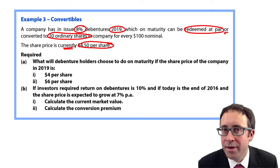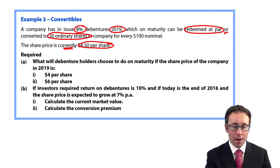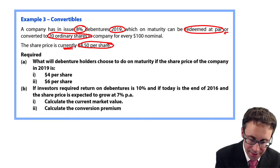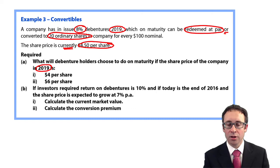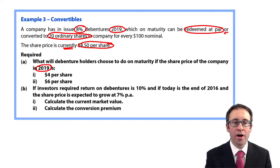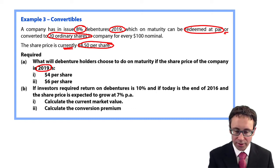Part A says, what will the debenture holders choose to do on maturity if the share price of the company in 2019, so in the future, is $4 or $6 per share? Would you convert?